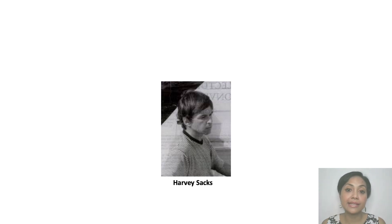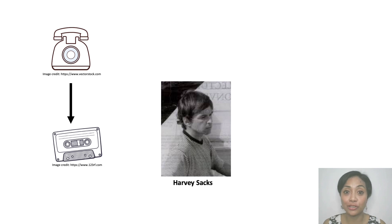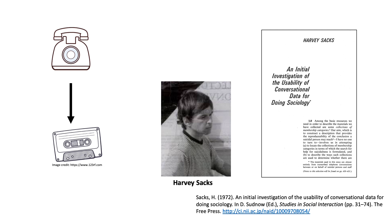In the early 60s, Sacks was a fellow at the Center for the Scientific Study of Suicide in Los Angeles. To put a long story short, his fellowship enabled him to gain access to recordings of calls to the suicide prevention hotline. One of his earliest works based on this audio recorded data is on categories of people to turn to — meaning people to look for help in the context of suicide.